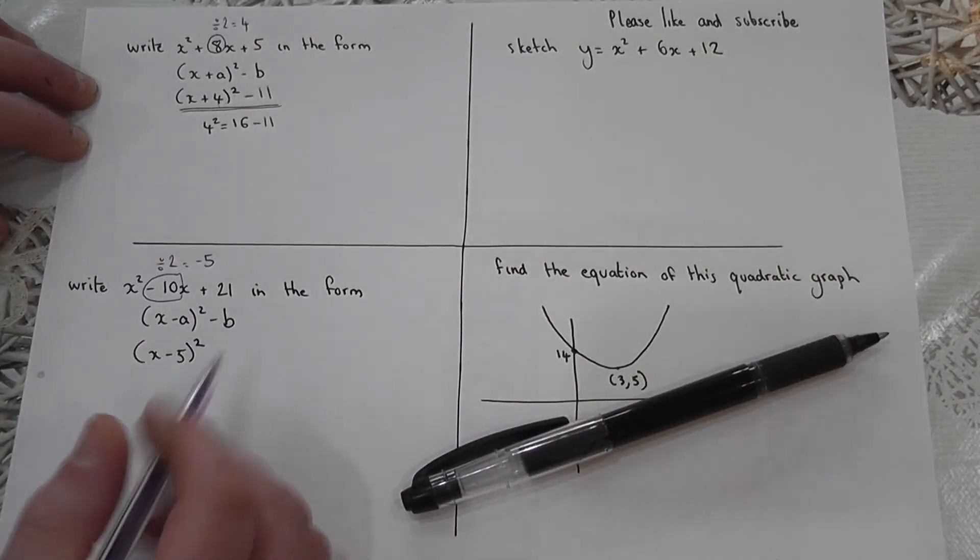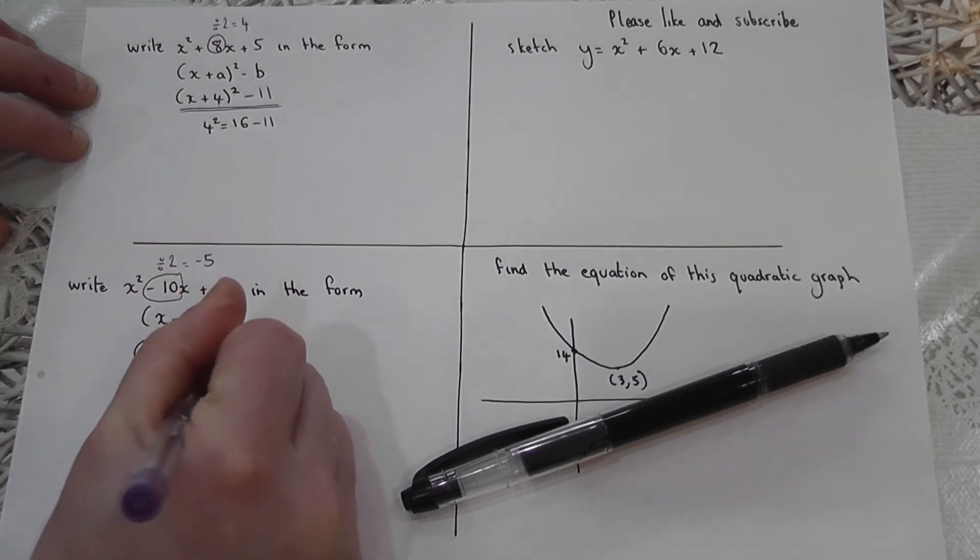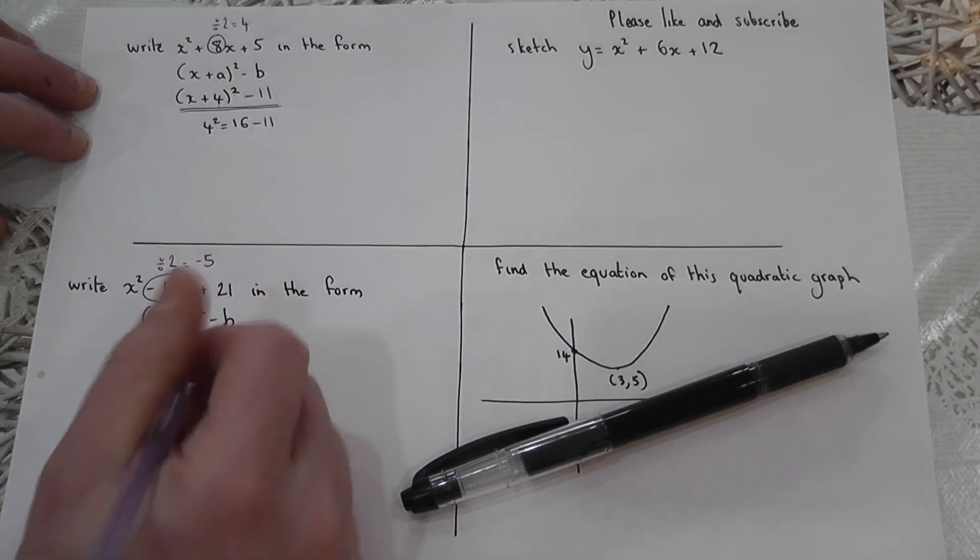However, negative five squared, be really careful here, if you square negative five, it becomes positive 25. But I want a 21. So to get 25 down to 21, I've got to take away four.